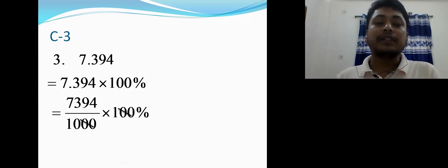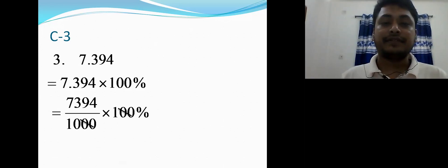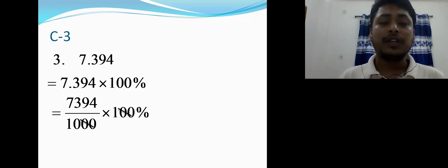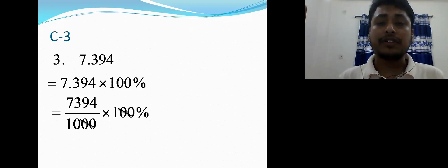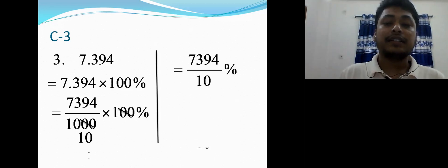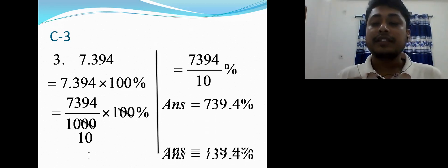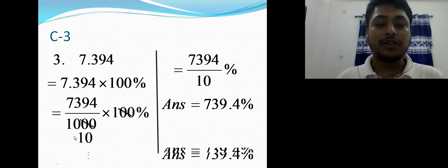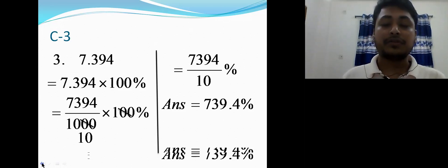Cancel two zeros from 1000 and two zeros from 100, leaving 7394/10. Dividing by 10: move the decimal one place from the right — the answer is 739.4 percent. So 7.394 converted to percentage equals 739.4 percent.